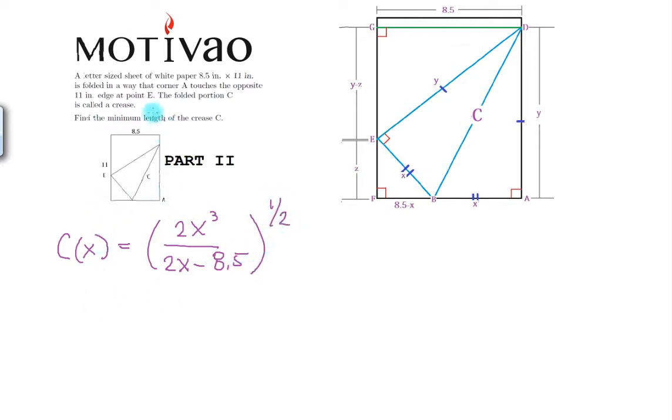To be able to find the minimum length of C, we need to find the derivative, as an optimization problem.